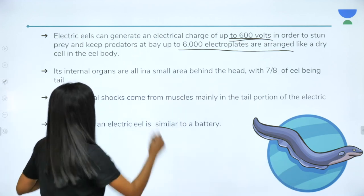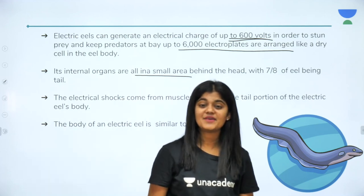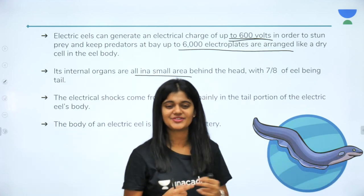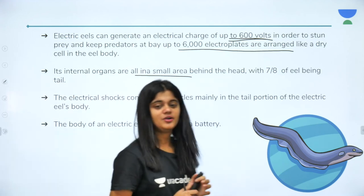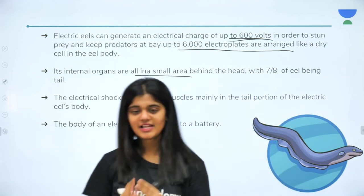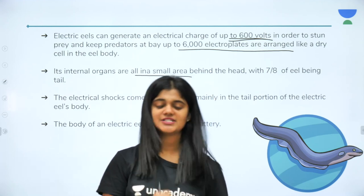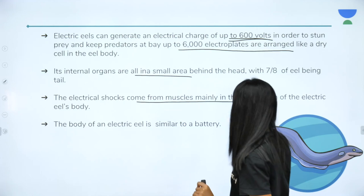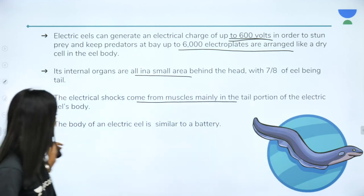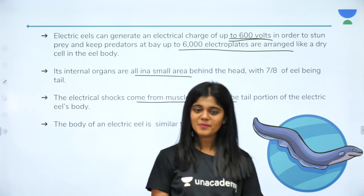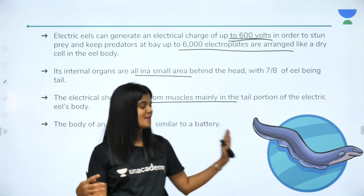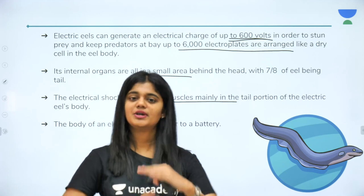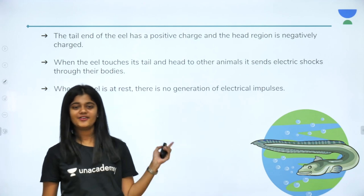Similar to how electric plates are arranged in a dry cell, electric eels also have around 6000 electric plates, which is why its name is electric eel. Its internal organs are in a small area behind the head, with 7/8 of the eel being tail. The electric plates generate electric charges and that can actually cause electric shocks. The electric shocks come mainly from muscles in the tail portion of the electric eel's body.